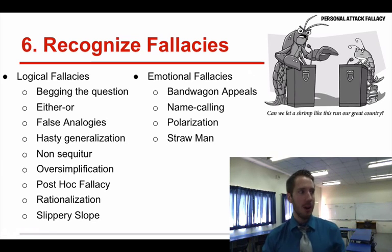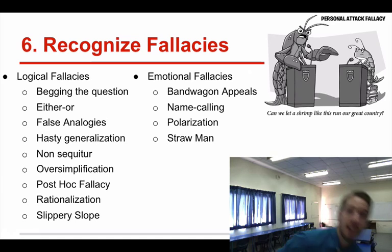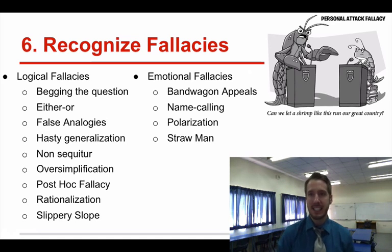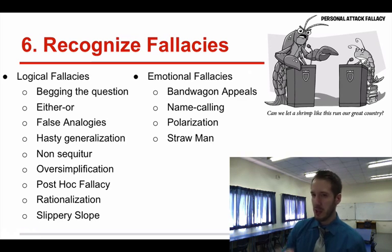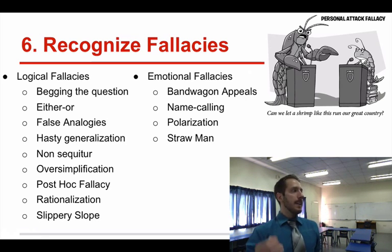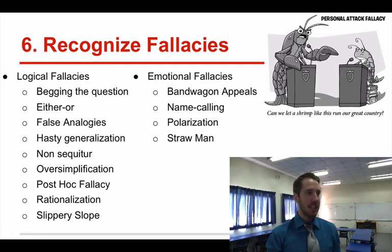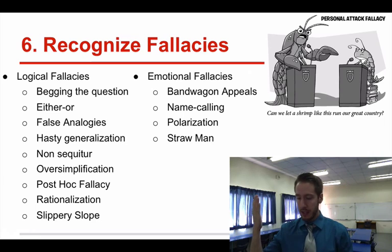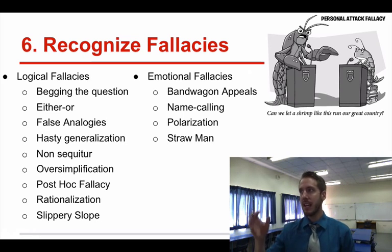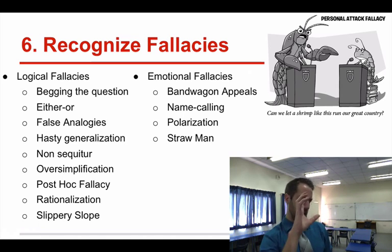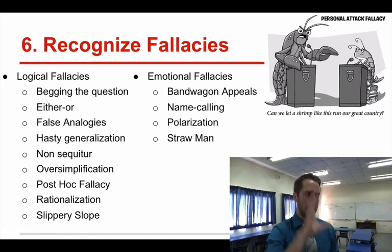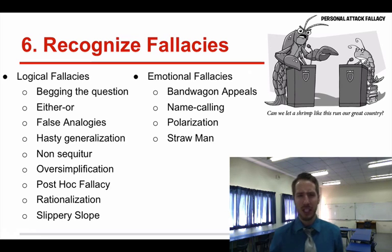Now, when looking at arguments, you also have to keep in mind something called fallacies — things that an author does in an argument that destroy their credibility. Our goal as readers is not to destroy the author, because most arguments, especially peer-reviewed ones, have valid points that we must acknowledge. But we do have to recognize when their arguments might be off. Let's talk about some of these fallacies.